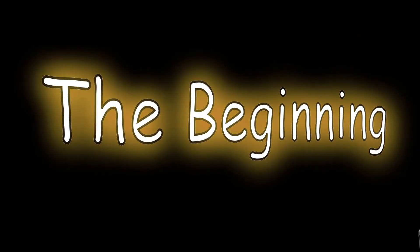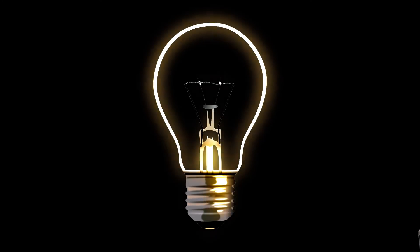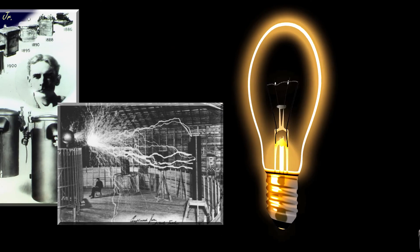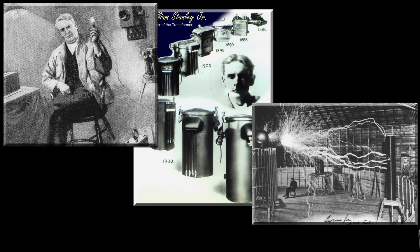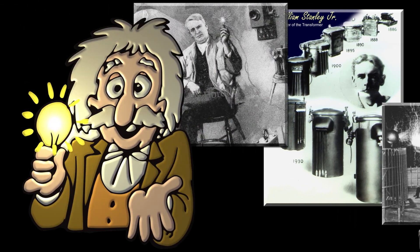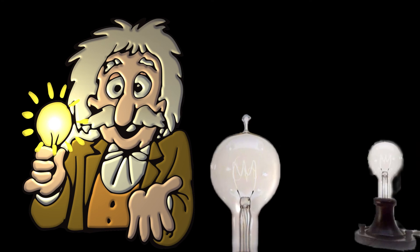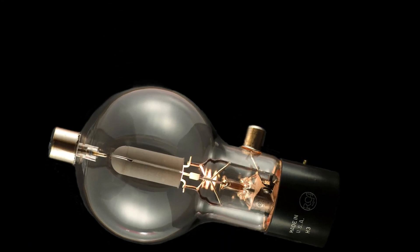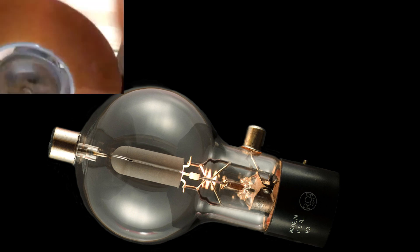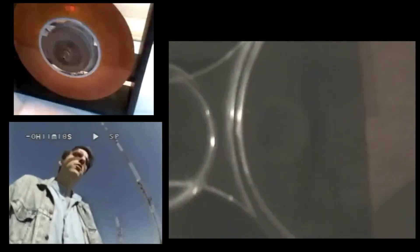Now let's take a look at the evolution of television over the years. Once electricity was able to be controlled more efficiently with inventions from Edison, Stanley, and Tesla, human ingenuity took off, rising to new levels. After Edison perfected the light bulb, the pivotal piece of equipment for television — the vacuum tube — was invented by John Ambrose Fleming. Television came into being based on the inventions and discoveries of many men and scientists.